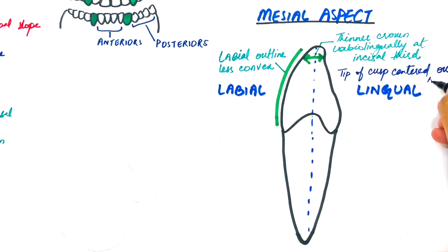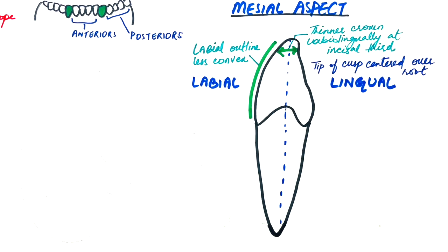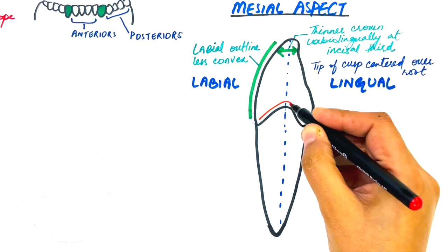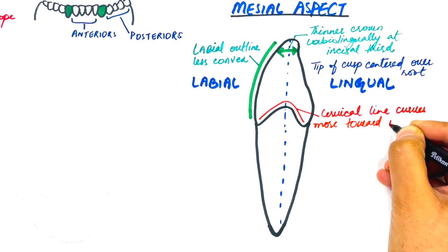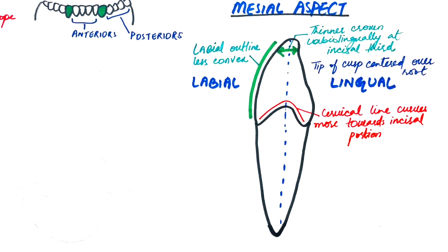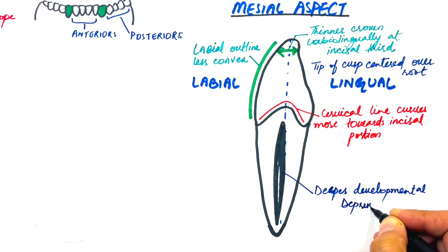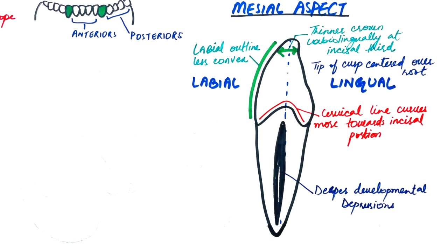The tip of the cusp is nearly centered over the root. If curvature of the crown tip is present, it often bends slightly lingual to the midline. The cuspal tip in the maxillary canine however lies slightly labial to the midline of the root and crown. The cervical line curves more towards the incisal portion than the curvature of the maxillary canine. The developmental depression on the mesial surface of the root is deeper than the mesial developmental depression of the maxillary canine.